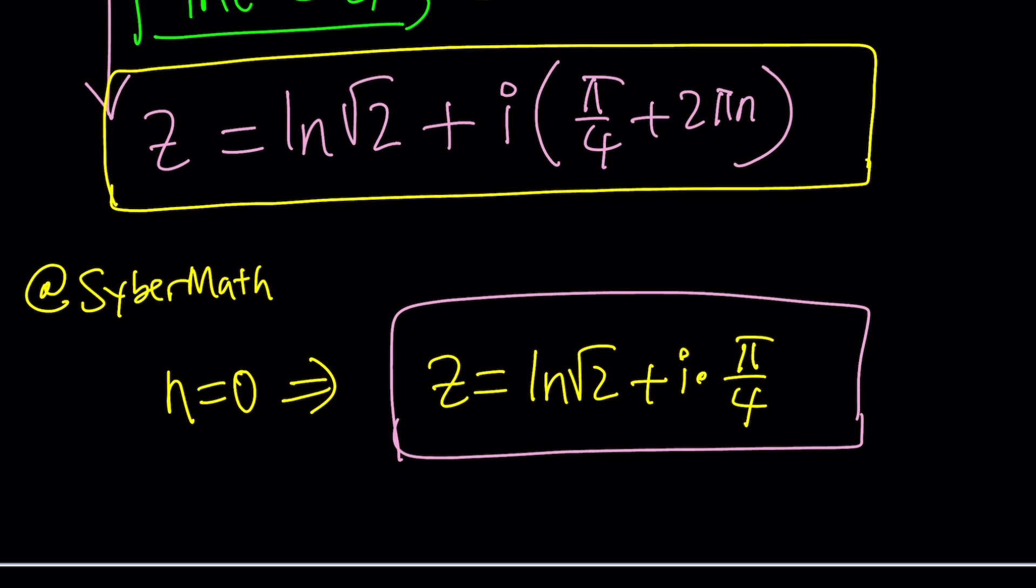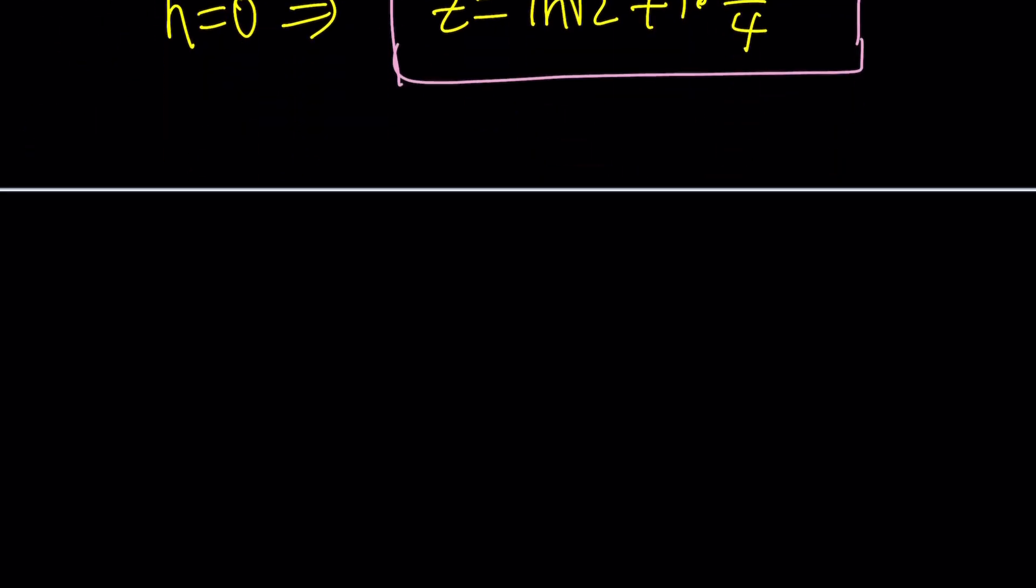Yay, we got the solution, and that kind of looks simple enough, right? So that should be the principal value. Now, do you think this is going to satisfy the equation? You can test it out. Do e^z, and you're going to see, hopefully, what I see. Now, let's go ahead and talk about an alternative approach, because I think it's fun. Second approach is very different. It's a different approach, okay? It's not always like that, so this time you're lucky.